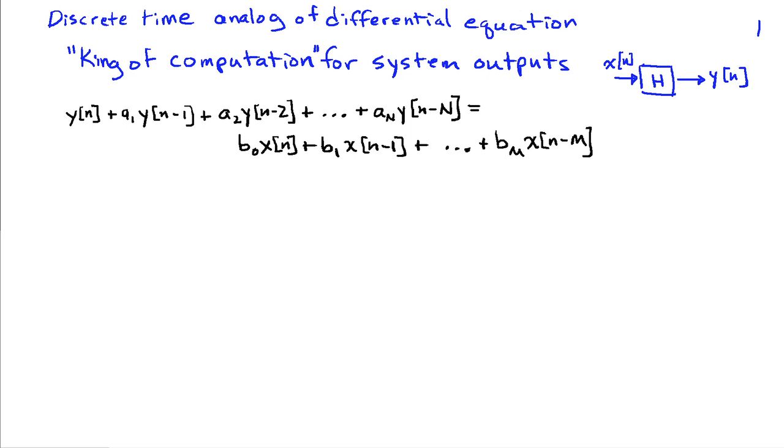I've written a difference equation in a general form here. We have y, the output of the system, plus a weight a1 times the past value of the output, plus another weight a2 times two past values of the output, finally n steps back times a_n. This equals b0 times the present value of the input, plus b1 times the past value of the input, and so on through b_m times a value of the input m steps back.